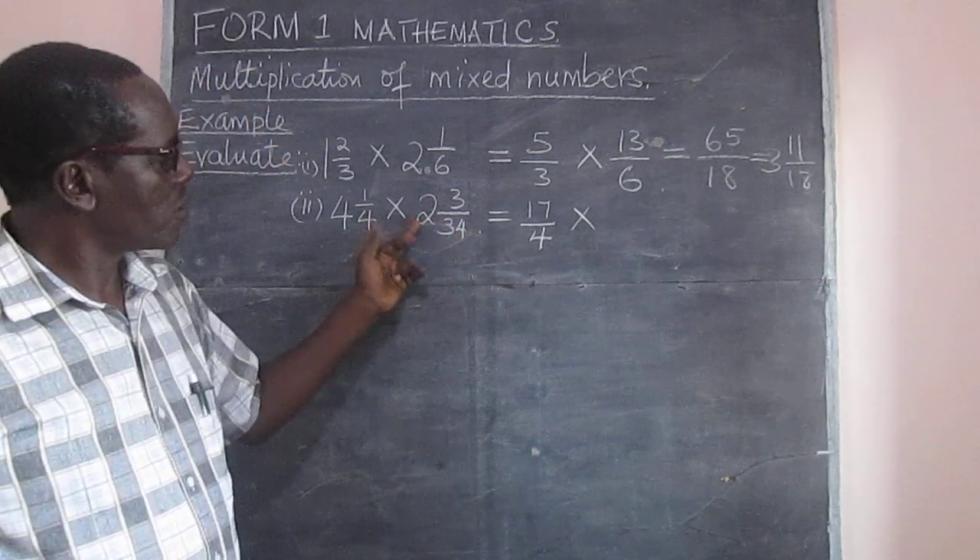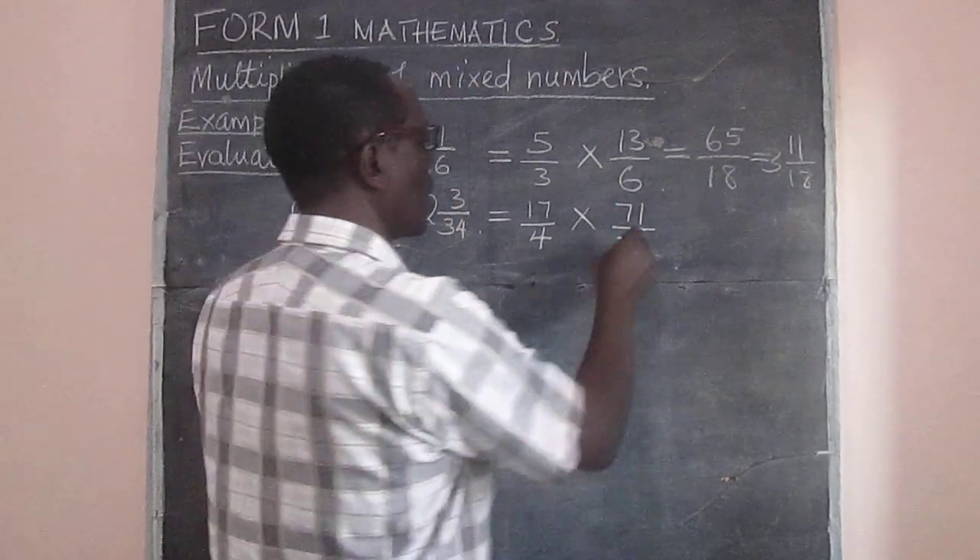Sixteen plus one, that's seventeen over four. Multiplied by two times four, that's eight, plus three to make eleven over four.